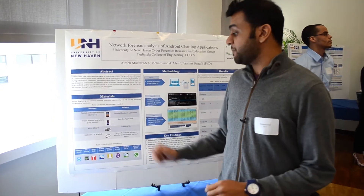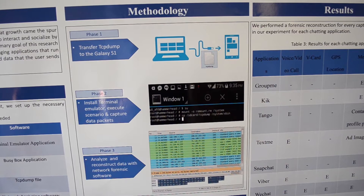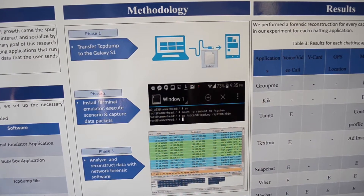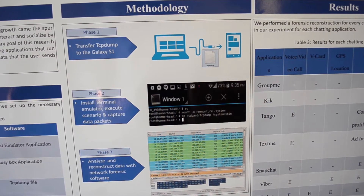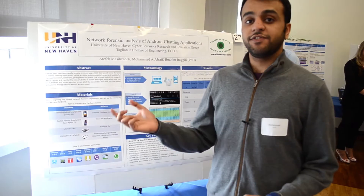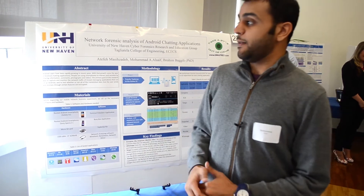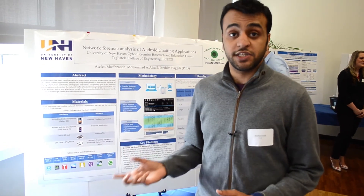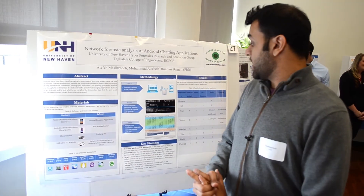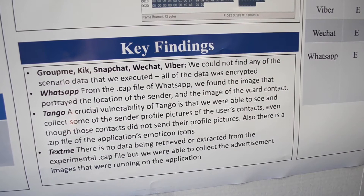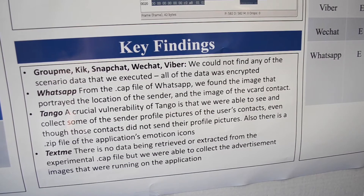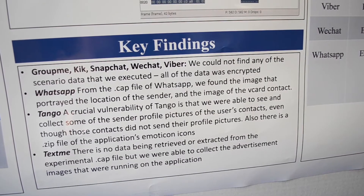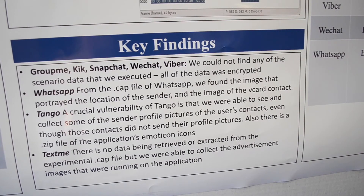We chose eight applications based on their popularity on the market. Our methodology was to install the application on the smartphone, execute our scenario, and capture the data packets. After that, we performed network analysis using software on the computer. We found some interesting results: five of the eight applications were secure, and three of them had some vulnerabilities. Our main goal was to determine which applications are secure and which are not.